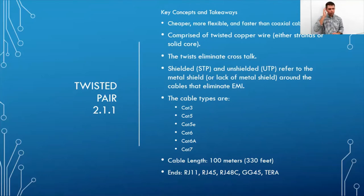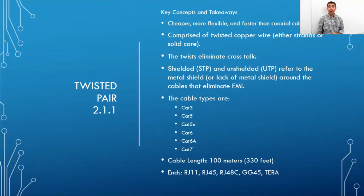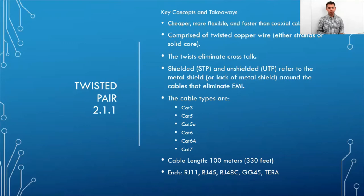The cable categories include Cat 3, Cat 5, Cat 5e, Cat 6, Cat 6a, and Cat 7. More categories will continue to be added that improve signal speeds and performance.